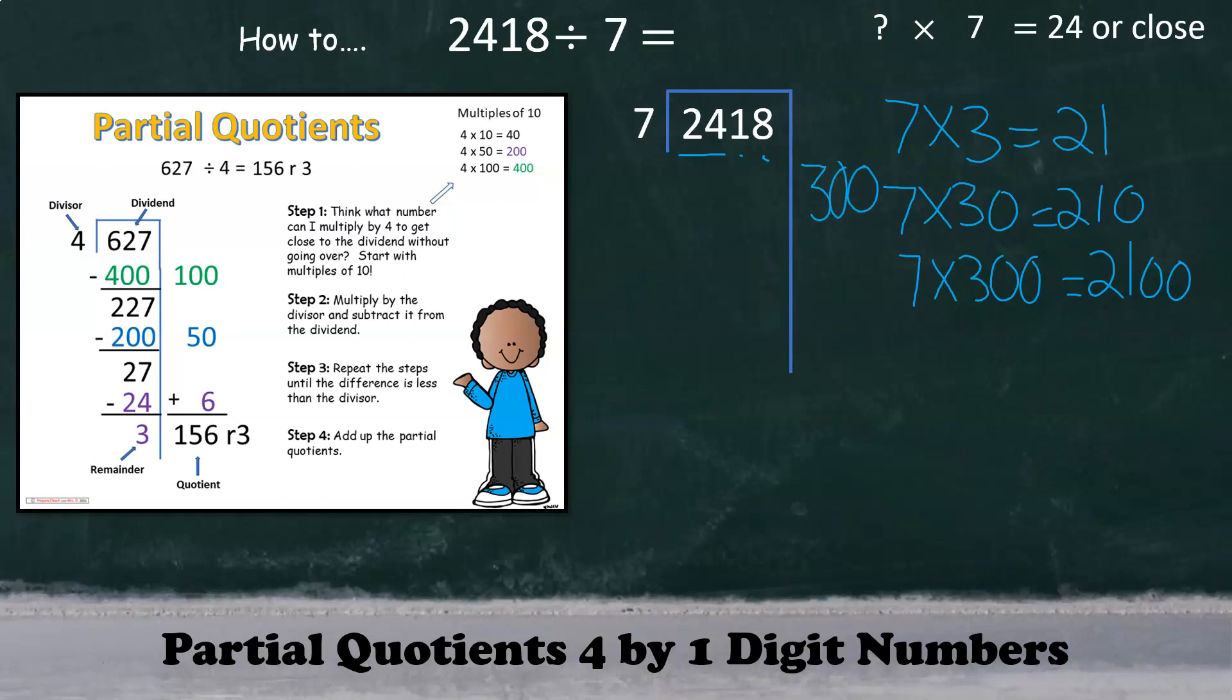And then we should move along to our second step, which is to multiply the partial quotient by our divisor, 300 times 7, and then subtract to find the difference. And since we have 318, which is much greater than our divisor, then we'll move on to our third step, which will continue to divide.